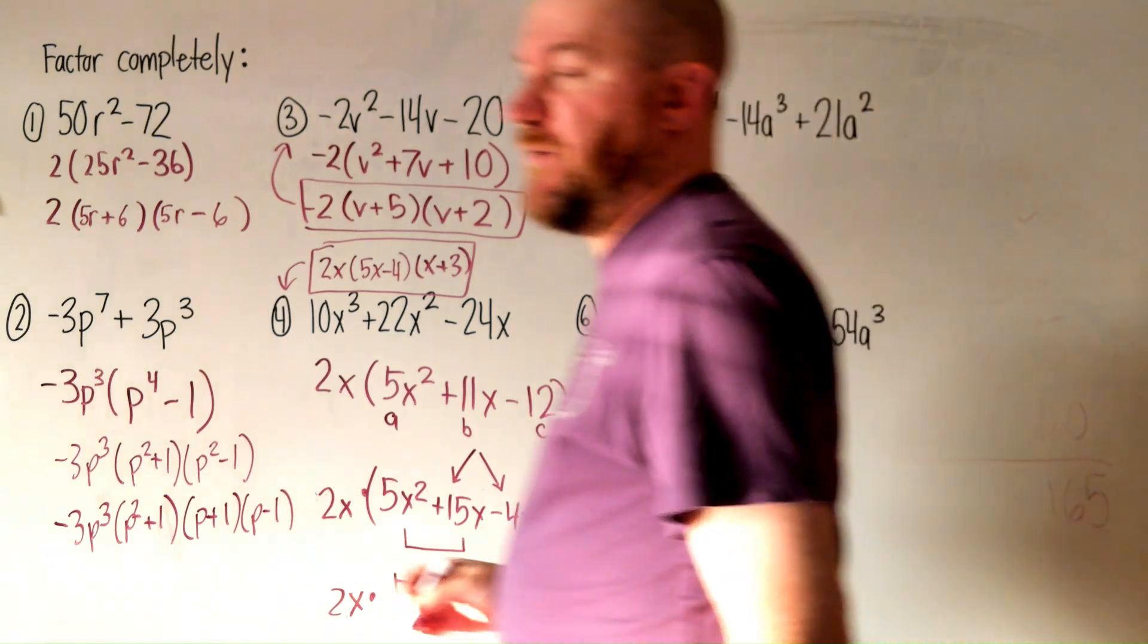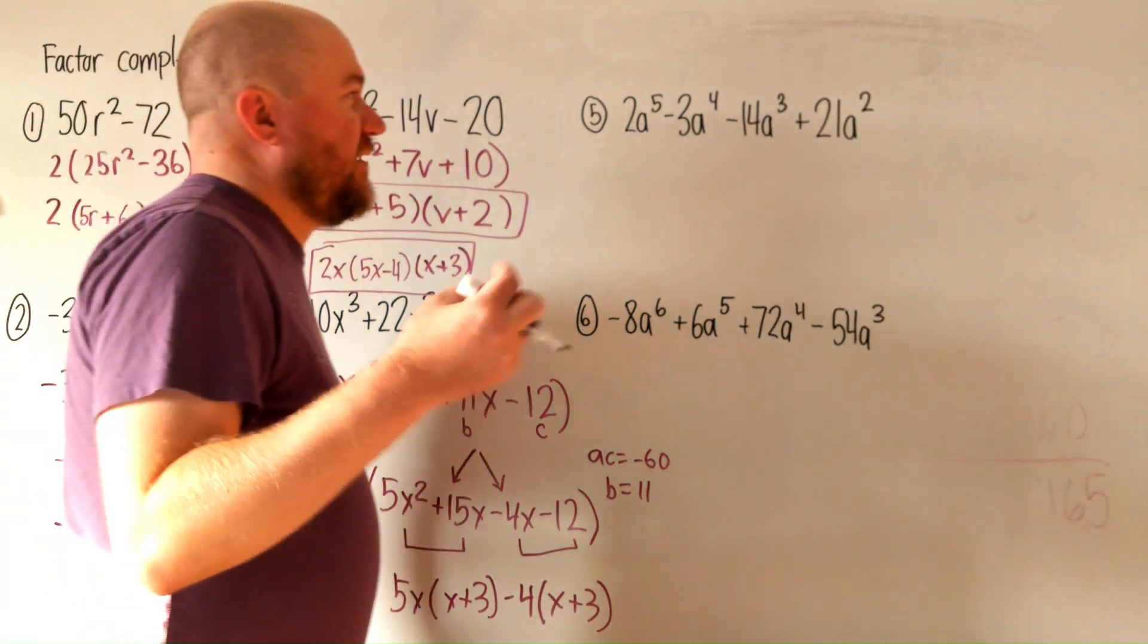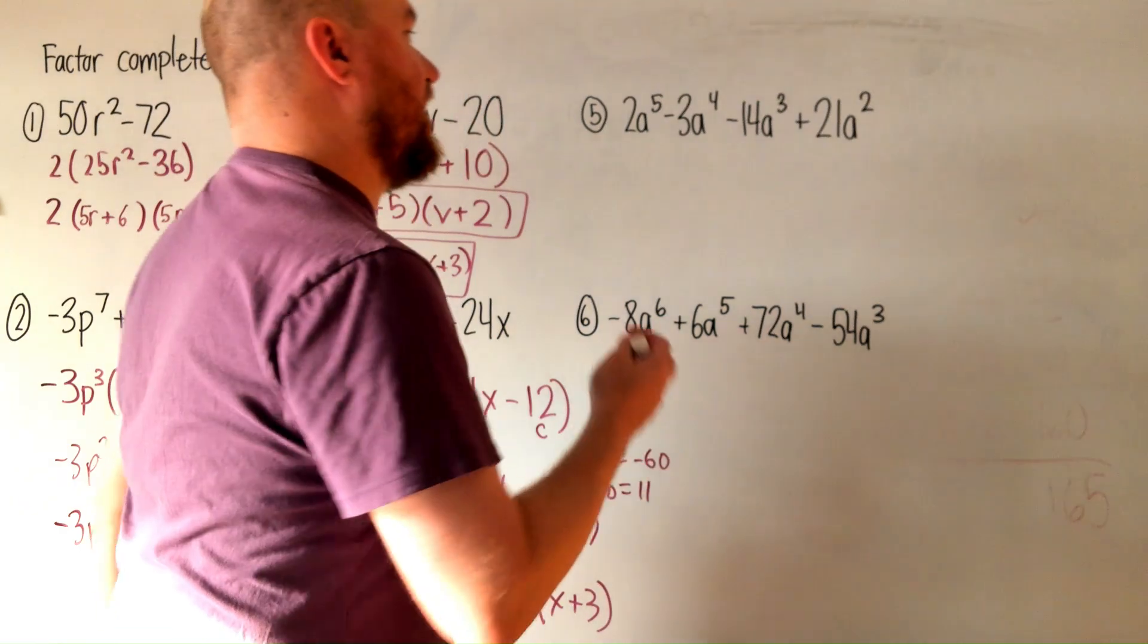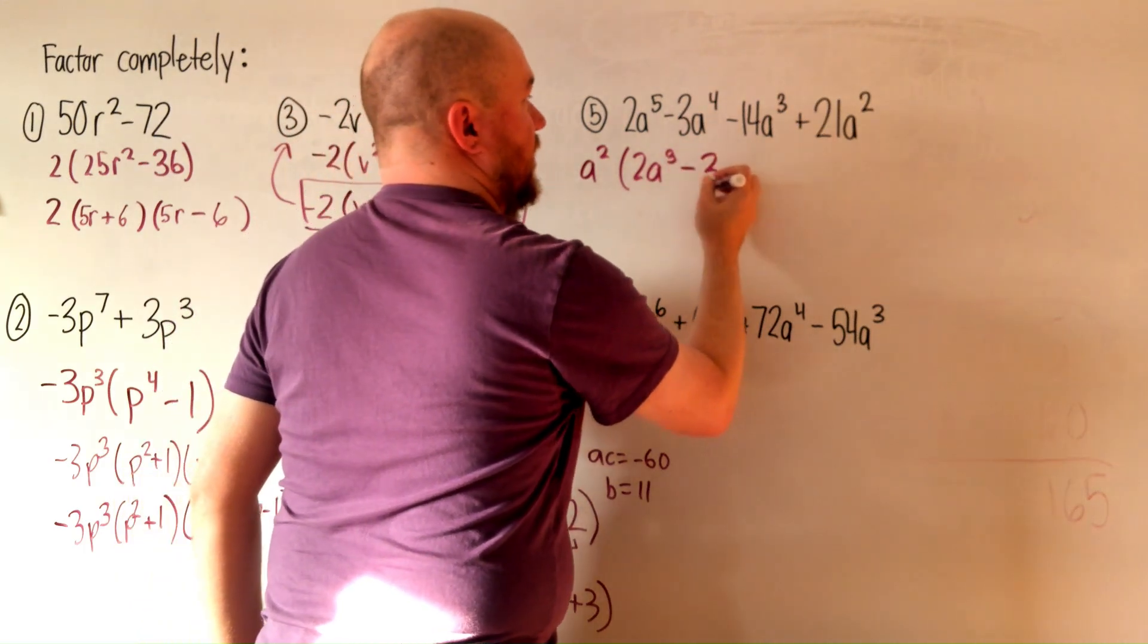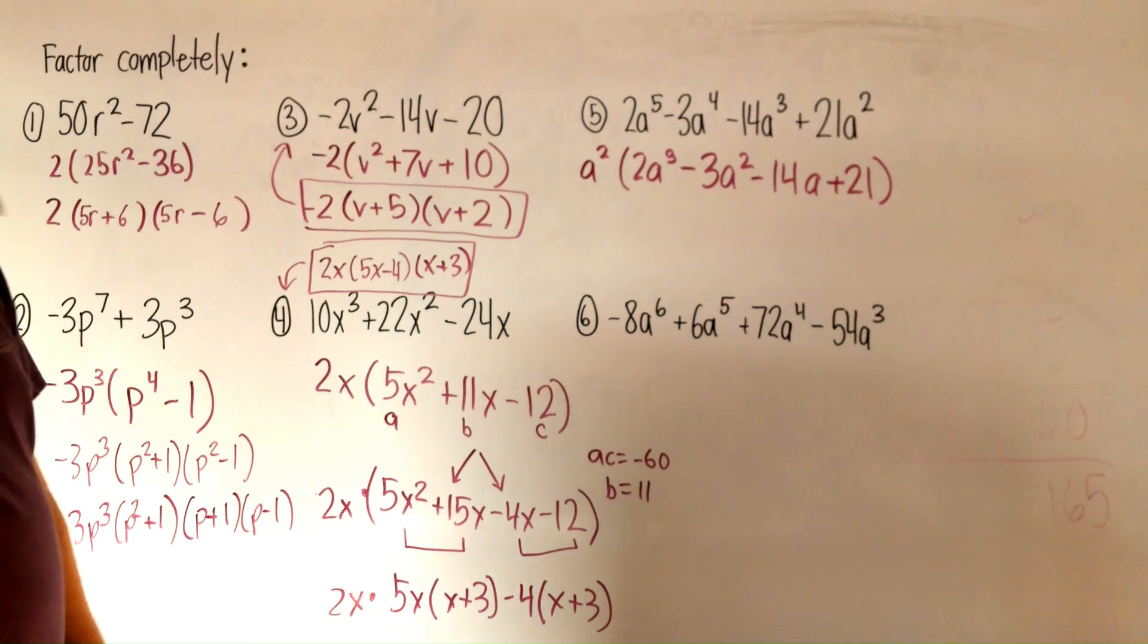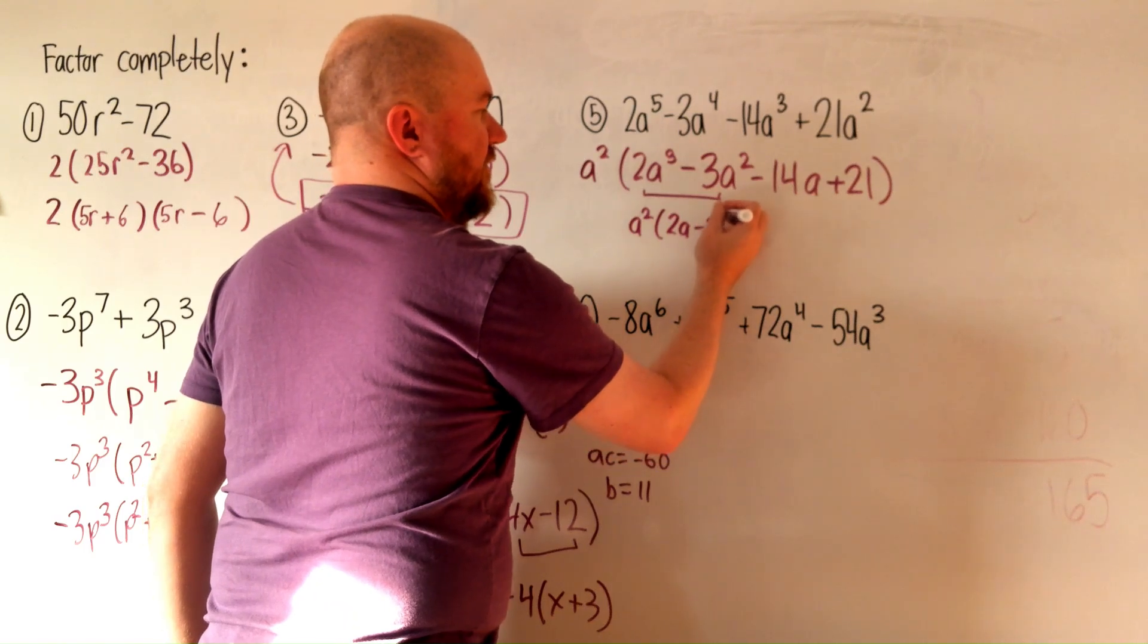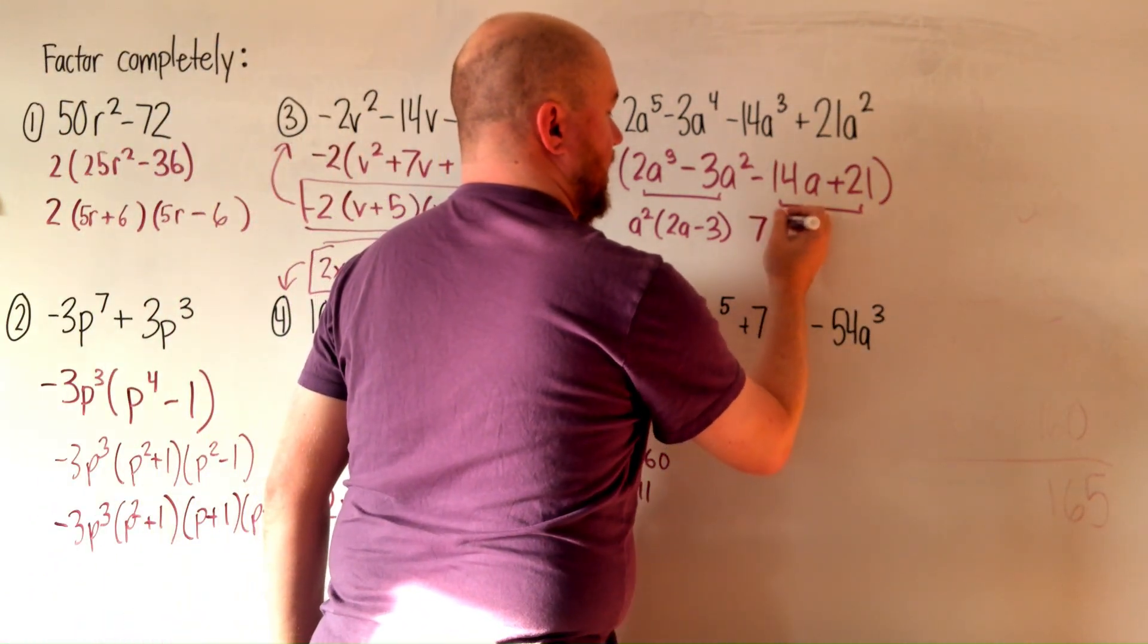Let's do question number 5. Question number 5 has 4 terms, so it'll probably end up being a grouping factoring question. Well, let's see if we can GCF. 2 and 3, right away I see those are prime numbers. There's nothing that can go into those. But they all have a's in common, so let's factor out a squared. We factor out an a squared, we get 2a to the third minus 3a squared minus 14a plus 21. And now let's do factoring by grouping. Let's group these two. The GCF of those two would be a squared. And we're left with 2a minus 3. And let's group those two. The GCF of those two would be a 7. And that would leave us 2a.